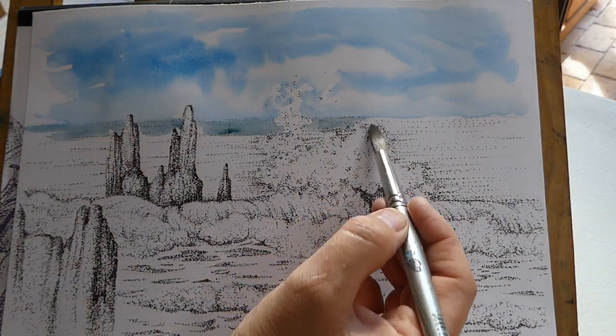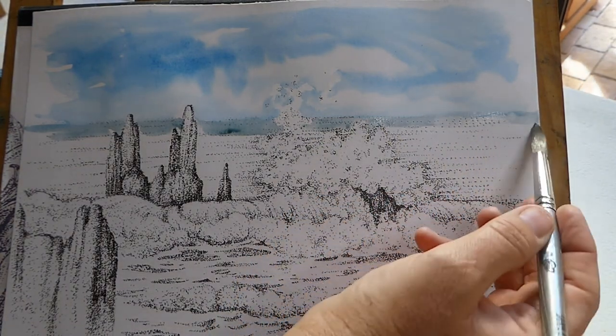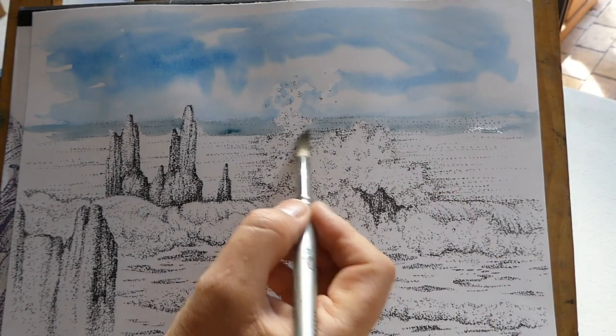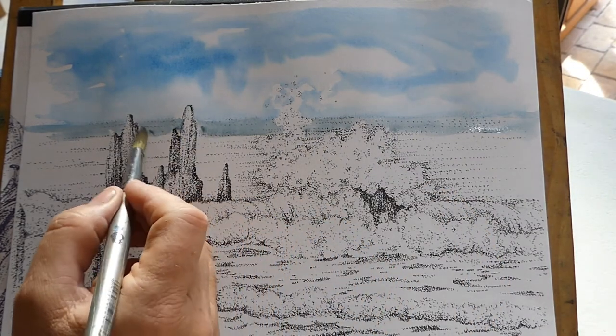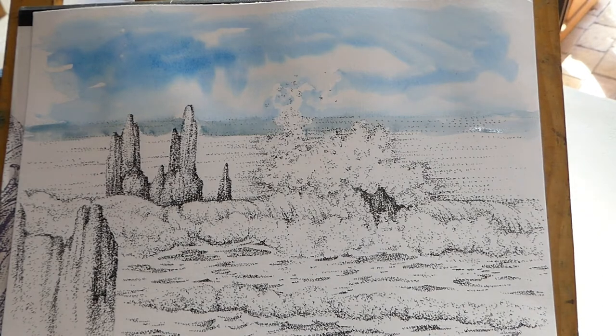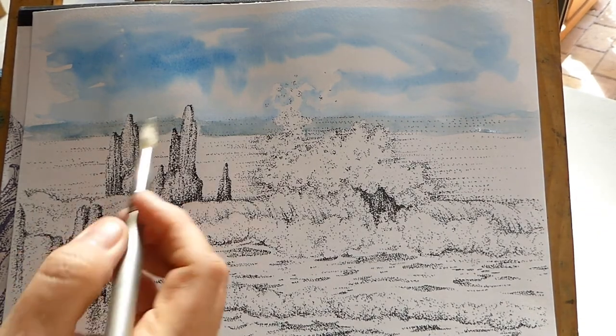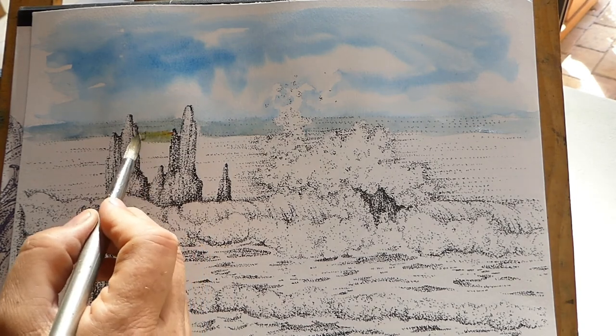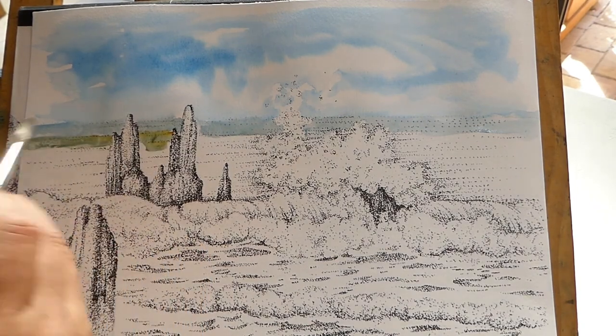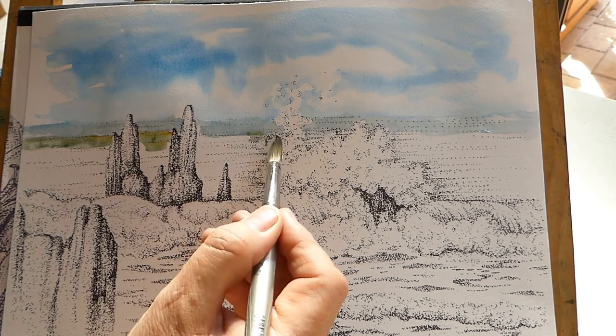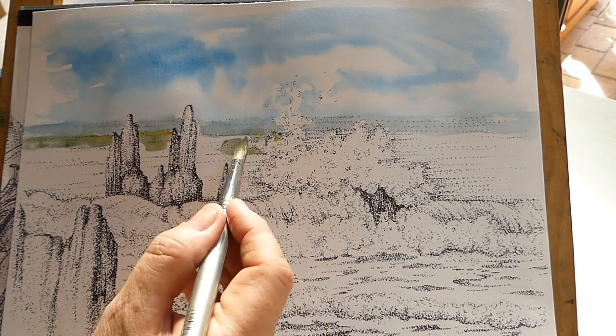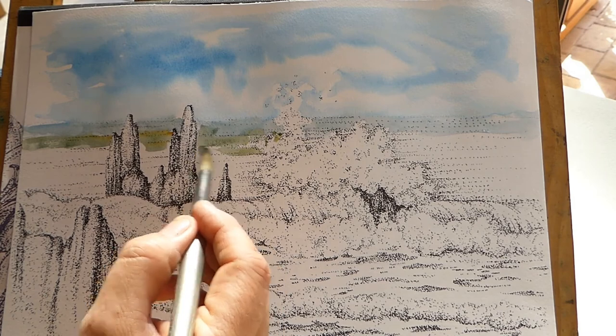Now here I've taken my ultramarine and I've added a little bit of the Payne's grey green shade to give me this sea color for the distance and I'm working horizontally because the sea tends to come across in bands of color. And this isn't a full painting, this is just putting a touch of color onto your drawing.